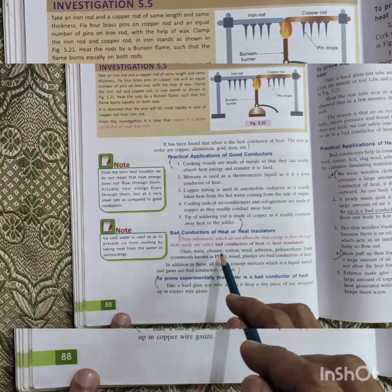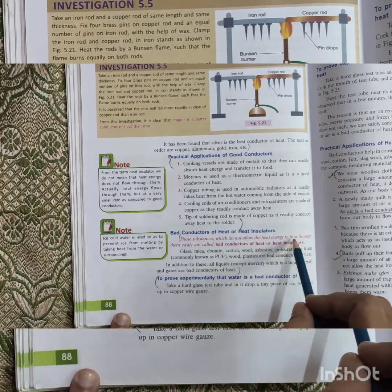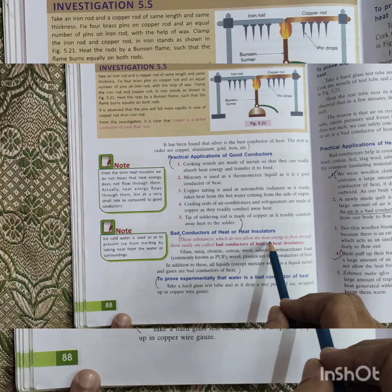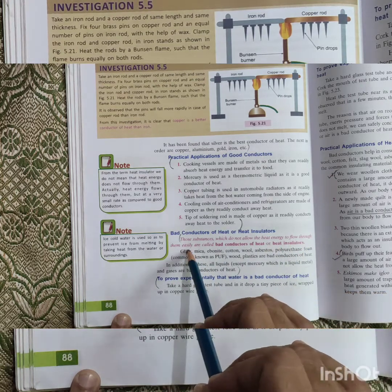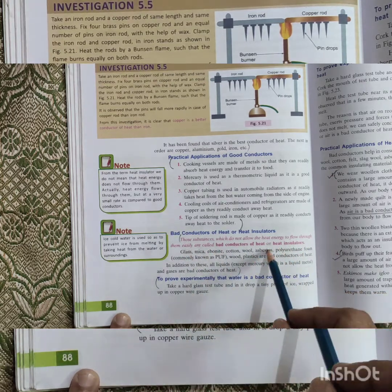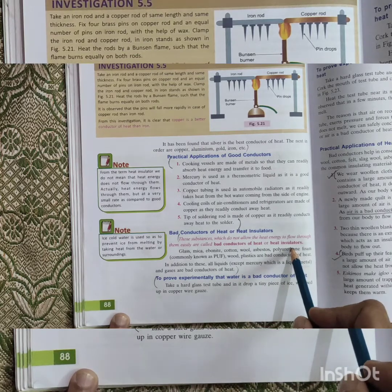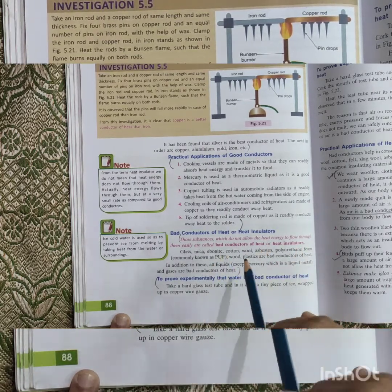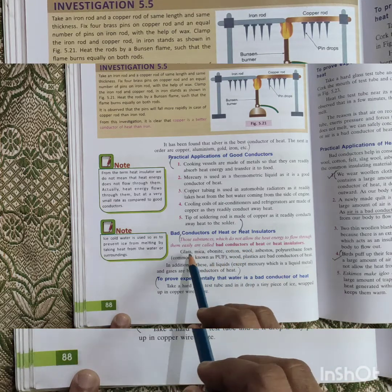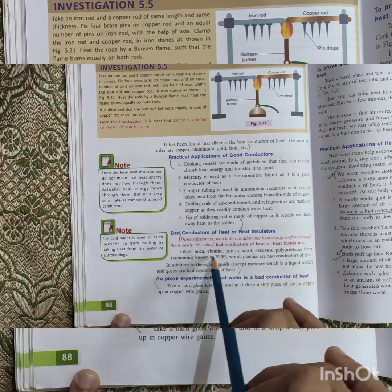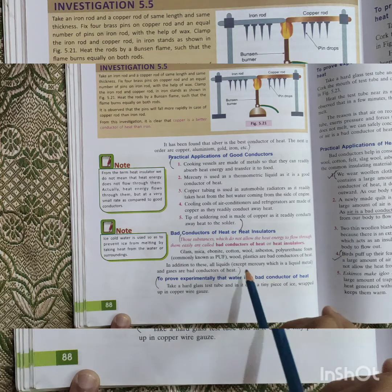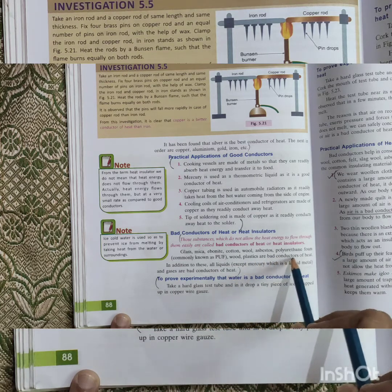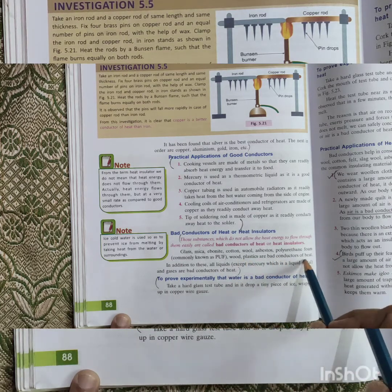What are the bad conductors of heat? Bad conductors which do not allow the heat to pass through, heat energy to flow through them easily. This is called bad conductor of heat, or it is also called insulator, heat insulator. Mostly the non-metallic substances: glass, mica, ebonite, cotton, wool. There are so many examples given, like plastics and wood, bad conductors of heat.